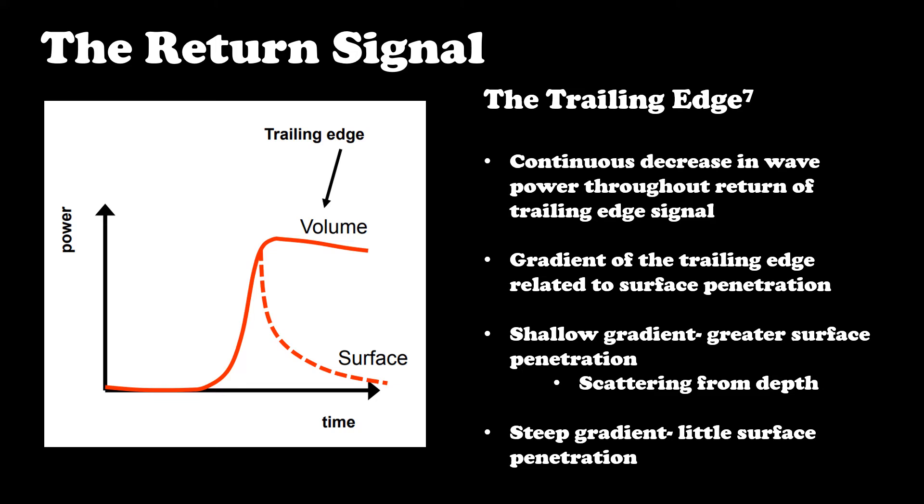The trailing edge tails off more rapidly when there's no penetration, i.e., the trailing edge is representative of the surface only. This can also tell us about the material properties of the surface below, like are we over land or ocean.